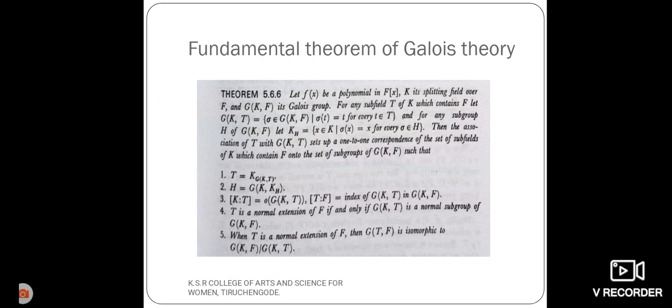For any subfield T of K which contains F, let G(K,T) equal the set of elements sigma belongs to G(K,F) such that sigma of T equals T for every T belongs to T.